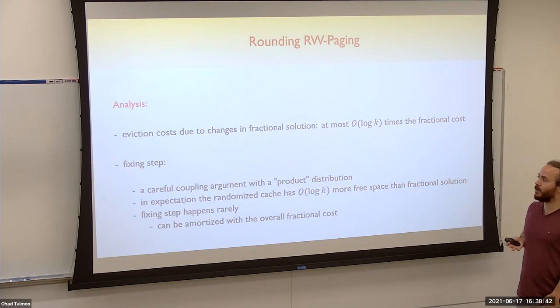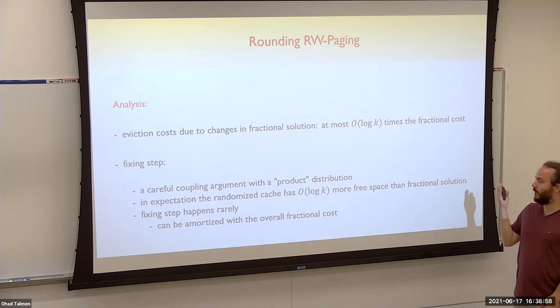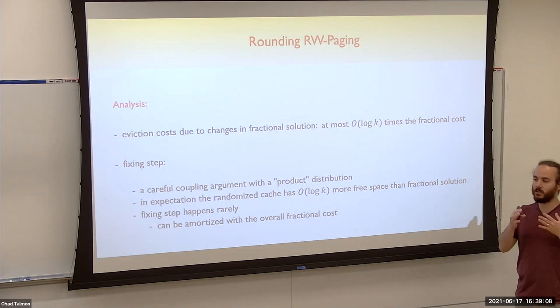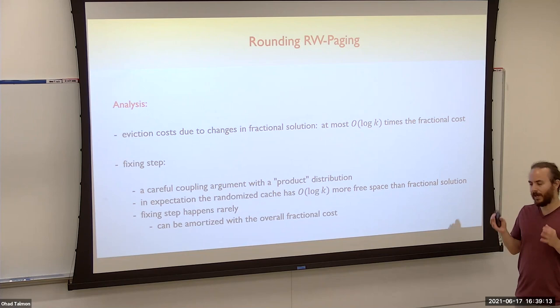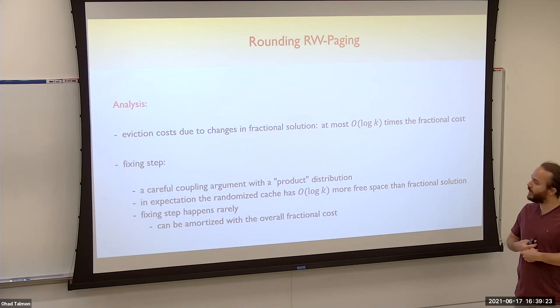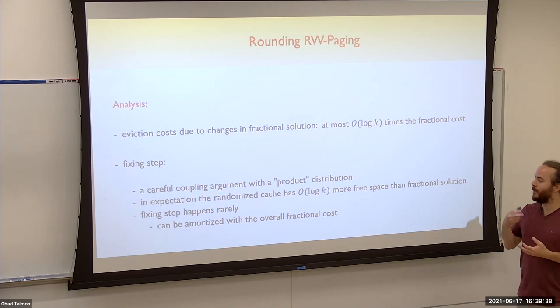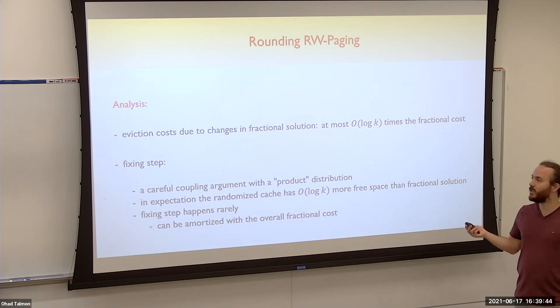To summarize the analysis: we evict due to changes in the fractional solution log k times more aggressively, costing log k times more than the fractional cost. The fixing step happens rarely and is amortized with the overall fractional cost using a coupling argument — each page is in the cache with probability equal to the fractional solution probability, so in expectation we have log k more free space than the fractional solution, ensuring the fixing step is covered. That's it — thank you very much, hope you enjoyed.